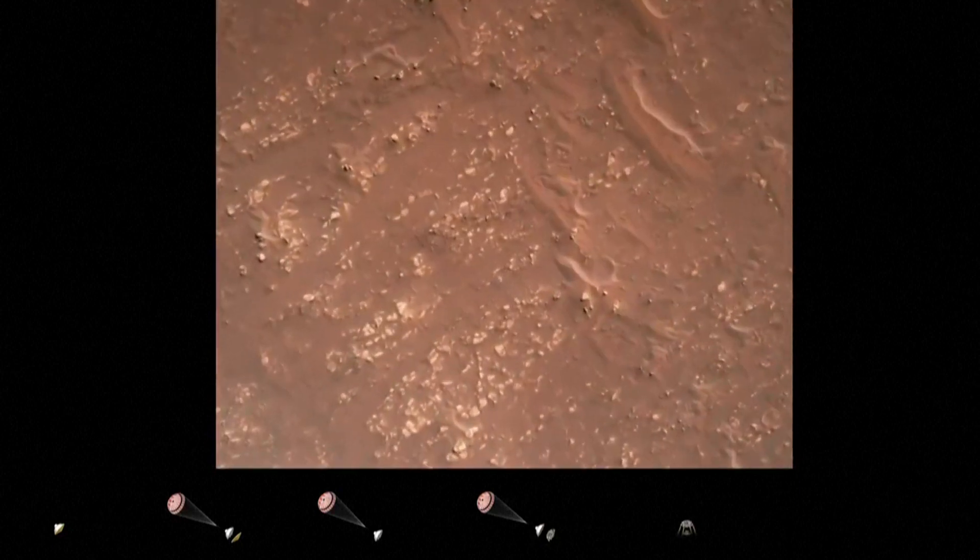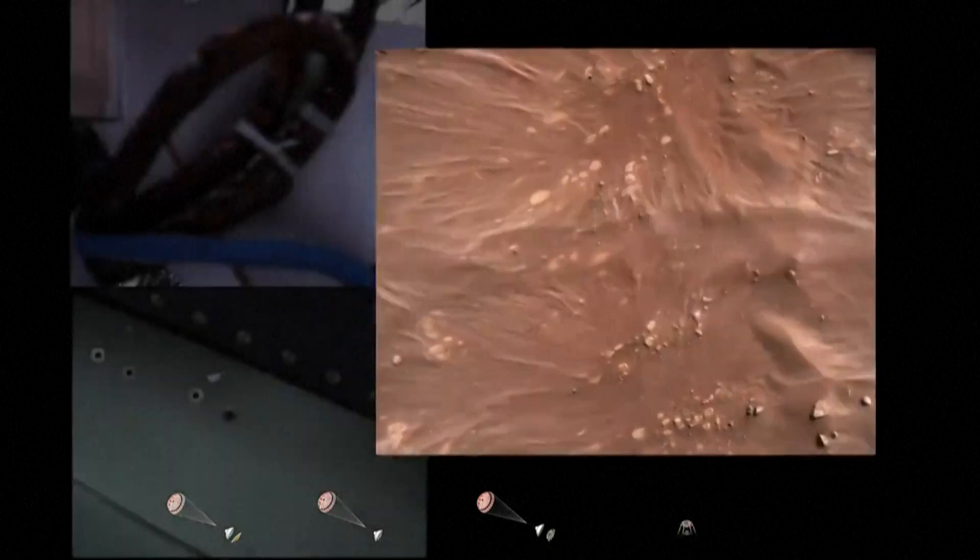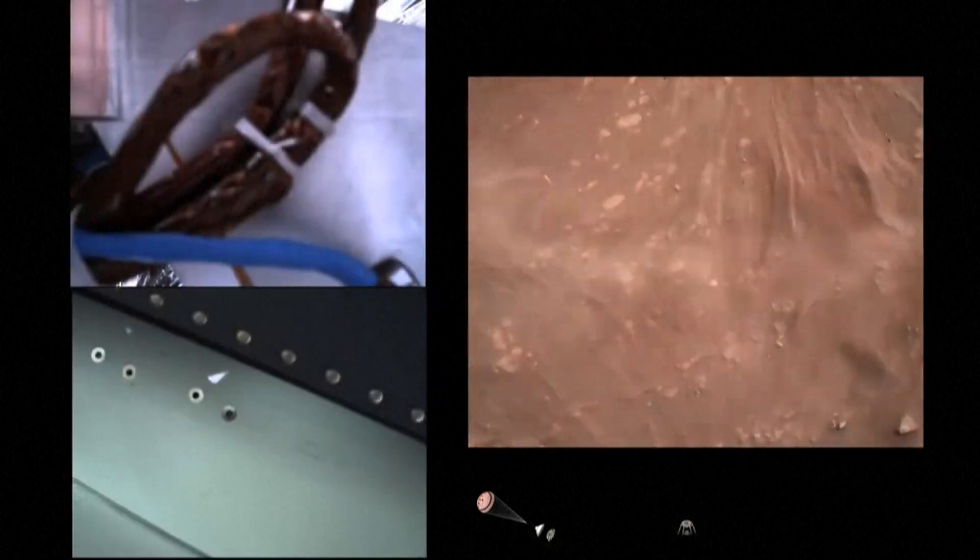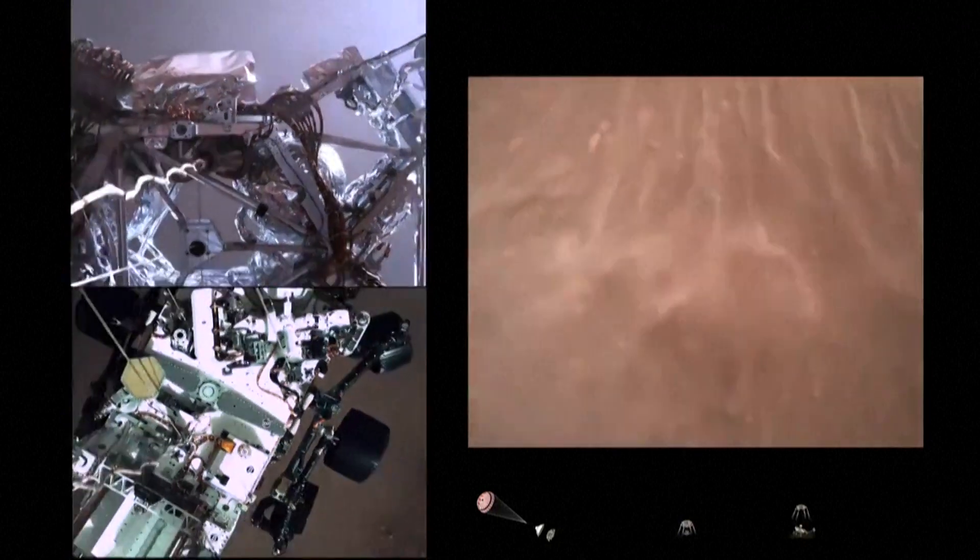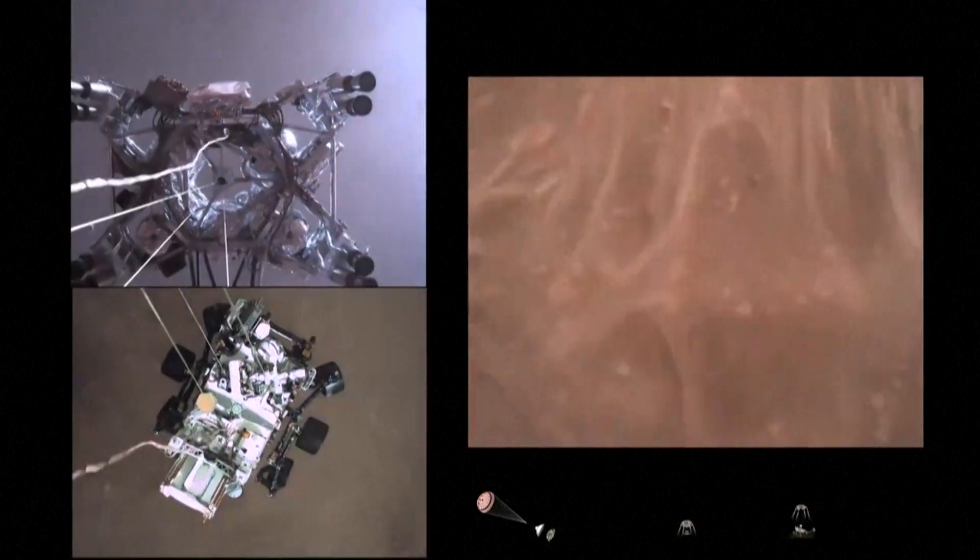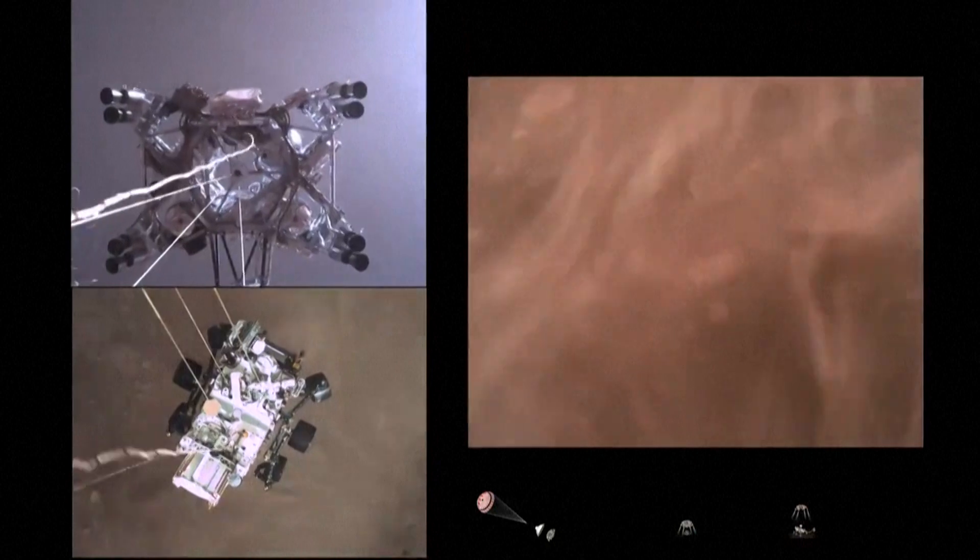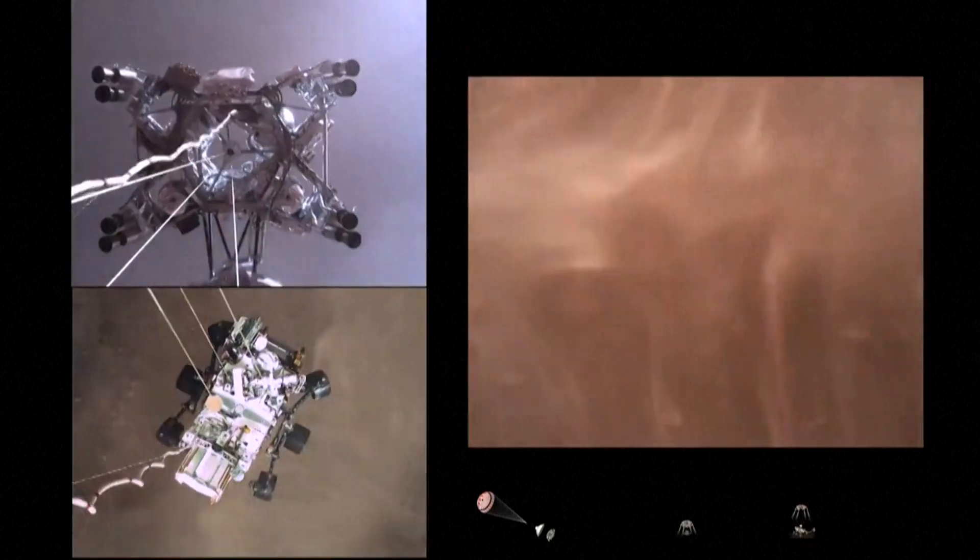We have started our constant velocity accordion, which means we are conducting the sky crane, about to conduct the sky crane maneuver. Sky crane maneuver has started. About 20 meters off the surface.